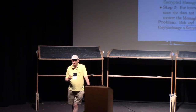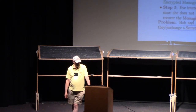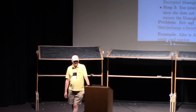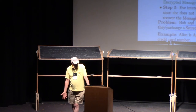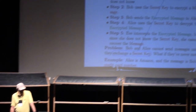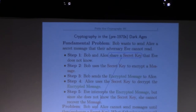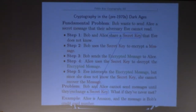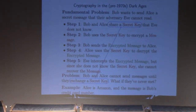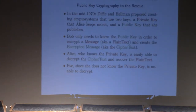Suppose Alice is Amazon and Bob wants to buy something — he needs to send his credit card number. Well, Bob is not going to go to Amazon headquarters and get a secret key. Amazon could send a secret key to Bob over the internet, but then Eve could read the secret key also. And needless to say, Amazon didn't exist in the mid-1970s, but nonetheless.